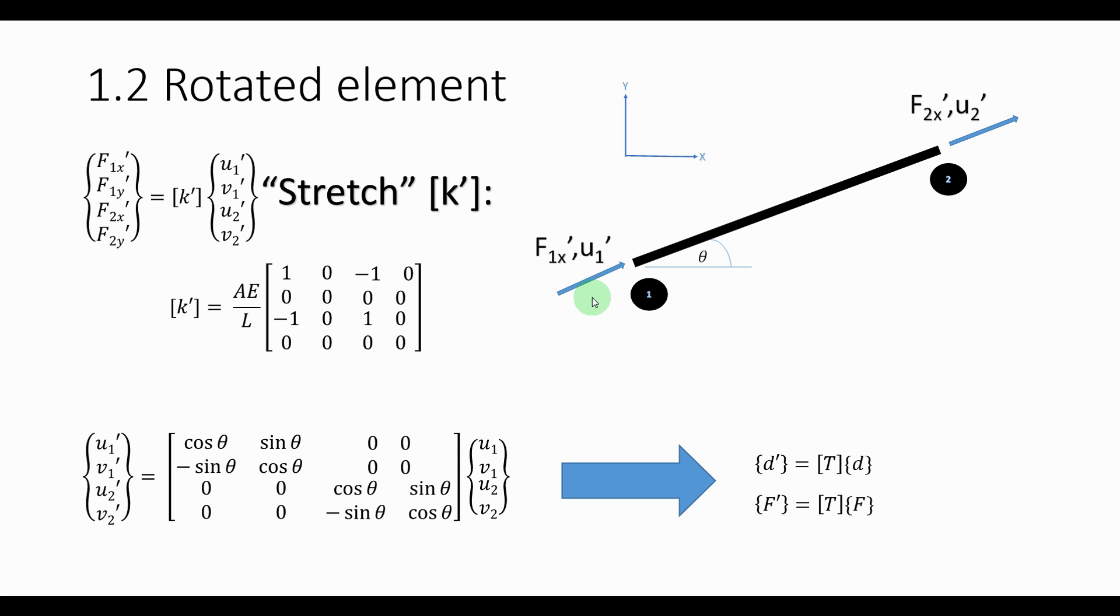F accent is the local forces acting on the member. I am just going to rewrite that to get F equals T transpose F accent. T transpose and T inverse is the same. It's a special property. You can also read up on that if you really need to.